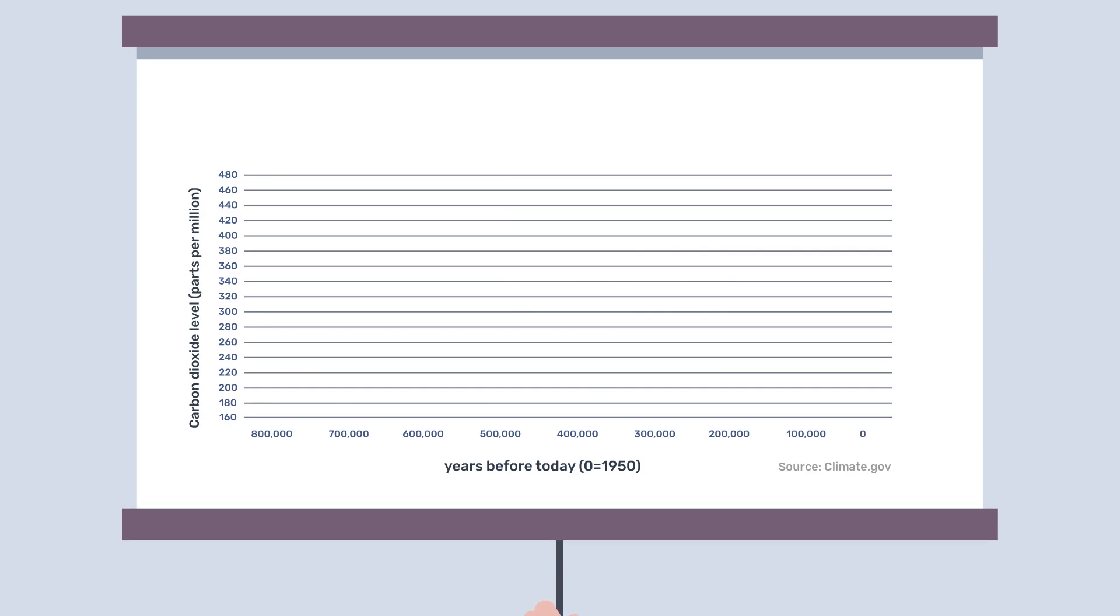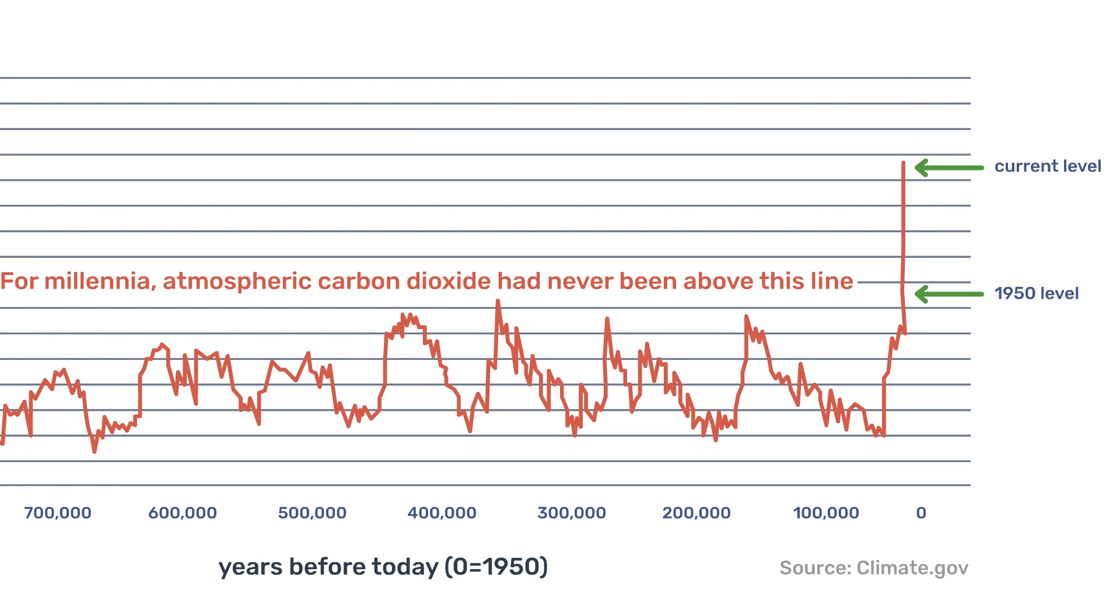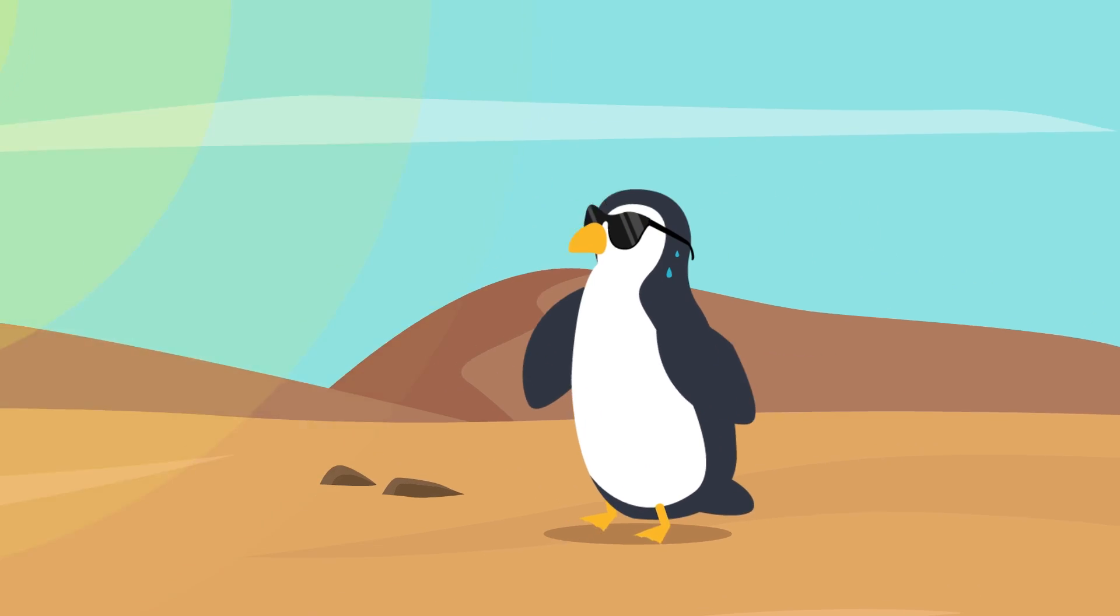Global carbon dioxide emissions have increased exponentially since the Industrial Revolution. And all this excess CO2 in the atmosphere is changing temperatures, melting ancient glaciers, and altering critical wildlife habitats.